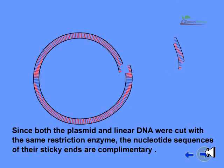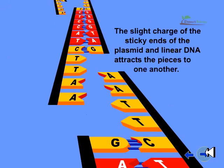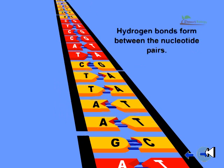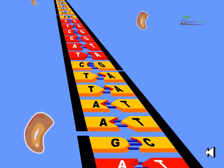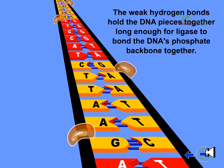Since both plasmids and linear DNA were cut with the same restriction enzyme, the nucleotide sequence of the sticky ends are complementary. The slight charge of the sticky ends of the plasmid and linear DNA attaches the pieces to one another. Hydrogen bonds form between nucleotide pairs. The weak hydrogen bonds hold the DNA pieces together long enough for ligase to bond the DNA's phosphate backbone together.